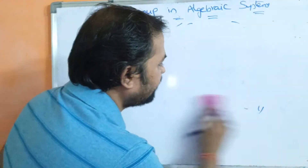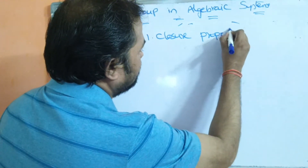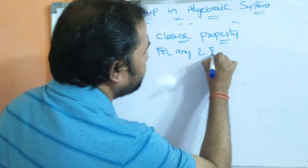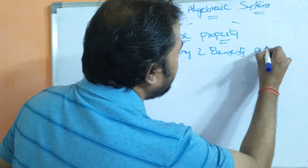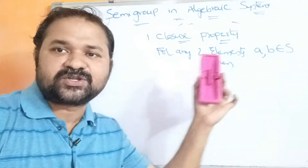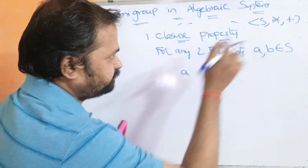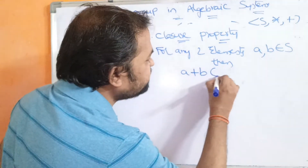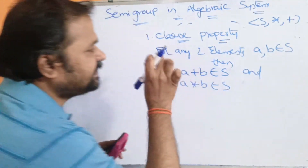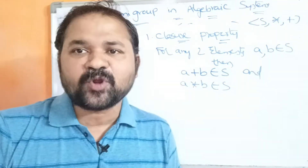Closure property: what is closure property? Closure property means we have to take two elements from the set. For any two elements A, B belonging to S, if A plus B belongs to S and A star B belongs to S, then we can say that the closure property is satisfied.